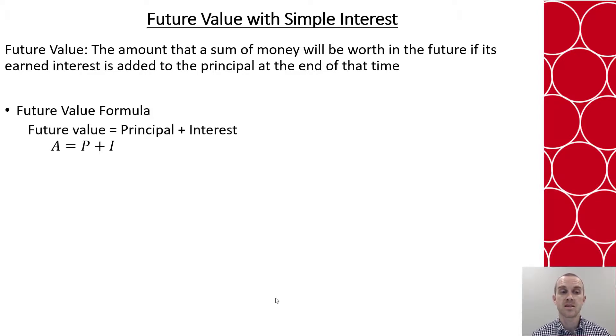So instead of putting another F, we often will see the letter A for future value equals P plus I. Now a minute ago we talked about the formula for finding interest which was P times r times t.